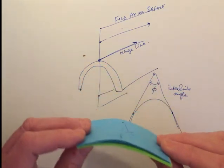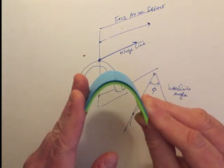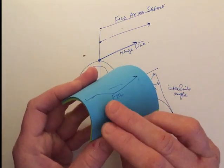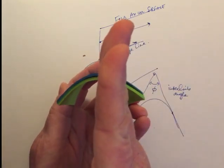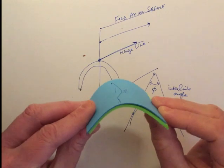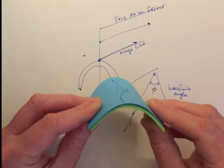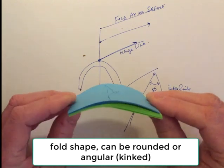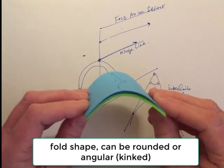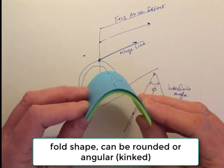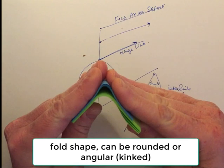These are the key features that we talk about with the fold: identifying the hinge and the limbs, identifying the fold hinge line, identifying the fold axial surface, identifying the orientation of both of those features as well as the interlimb angle. We can also talk about the shape of the fold—we can have a nice rounded fold or, if I fold my paper, I can have a much more angular or kinked fold.